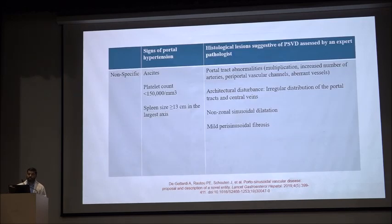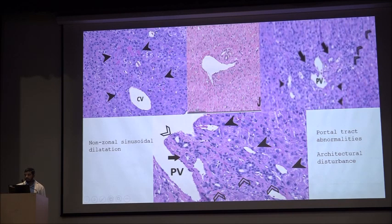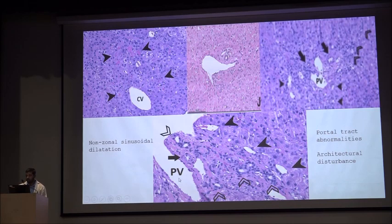Non-specific clinical signs of portal hypertension include ascites, low platelet count, and spleen size more than 13 cm. Non-specific histological signs include portal tract abnormalities such as multiplication, increased number, architectural disturbance, non-zonal sinusoidal dilatation, and mild perisinusoidal fibrosis. These include sinusoidal congestion, herniation of the portal vein, duplication of portal veins and bile ducts with multiple small portal veins visible alongside the main portal vein.